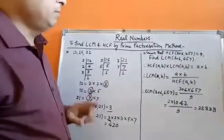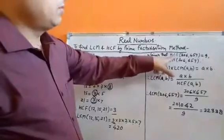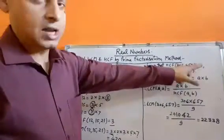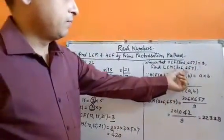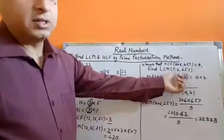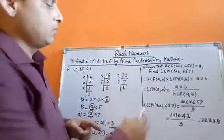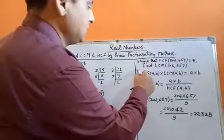Next we will take another problem. Given that HCF of 306 and 657 is 9, we will find the LCM of 306 and 657. We will use the formula.